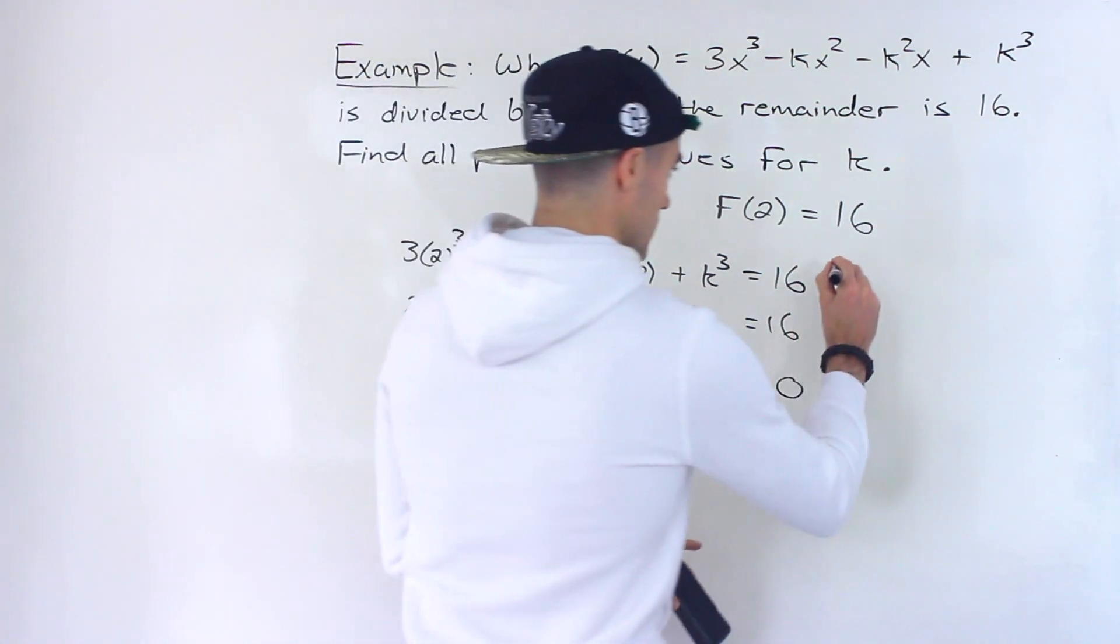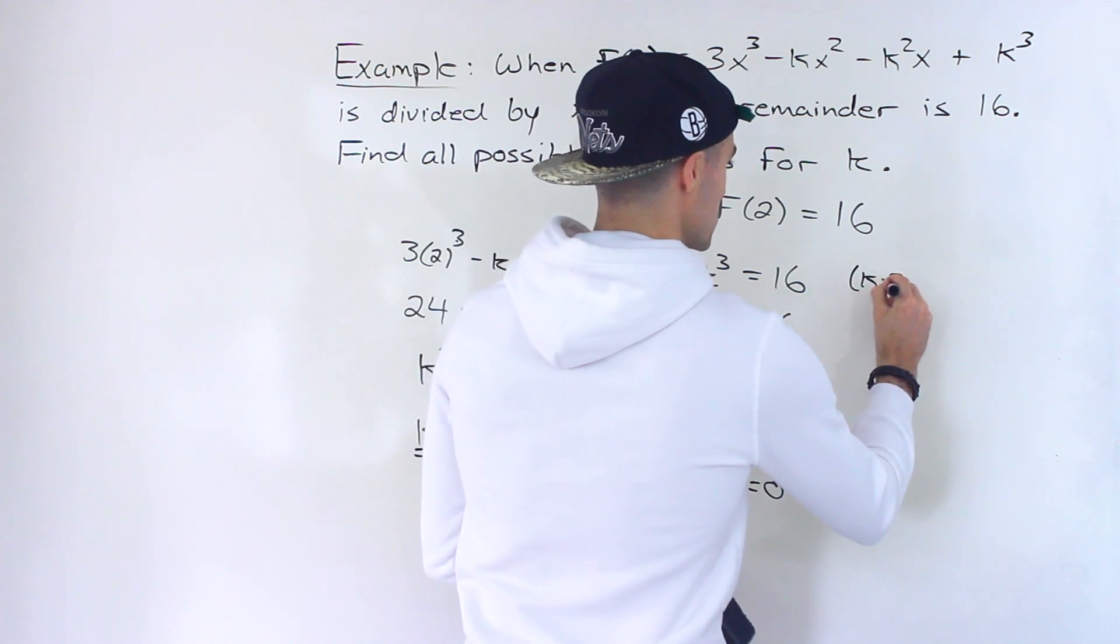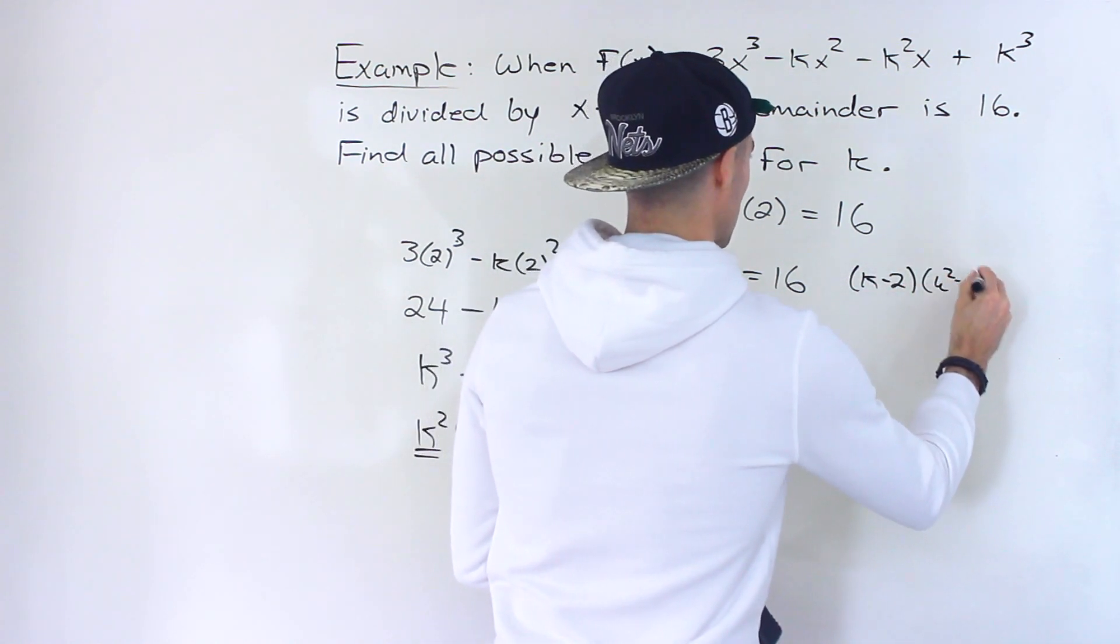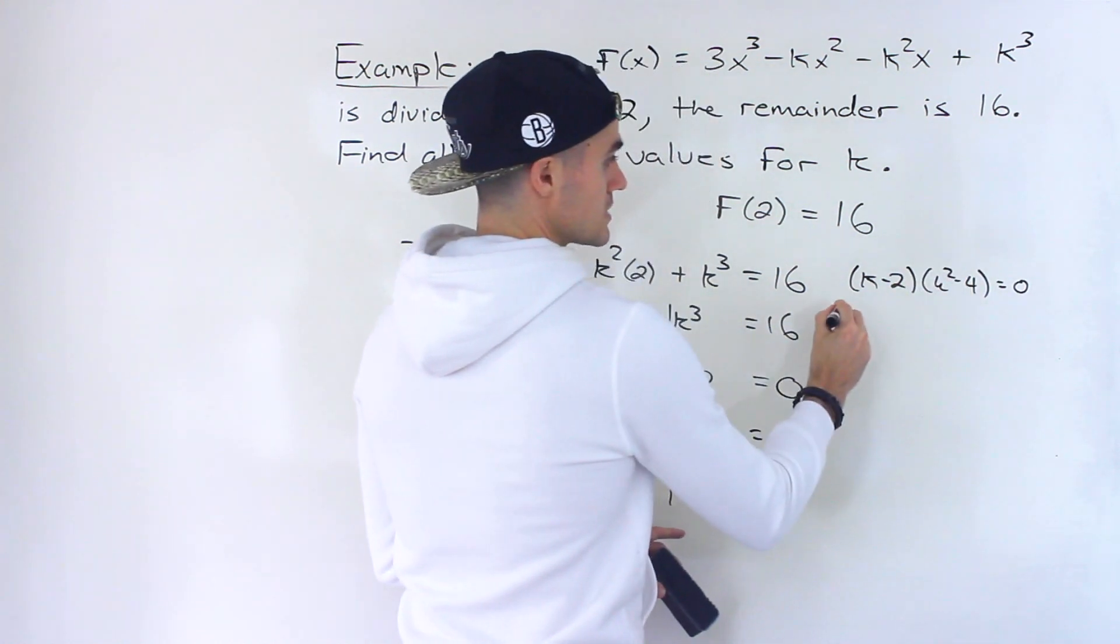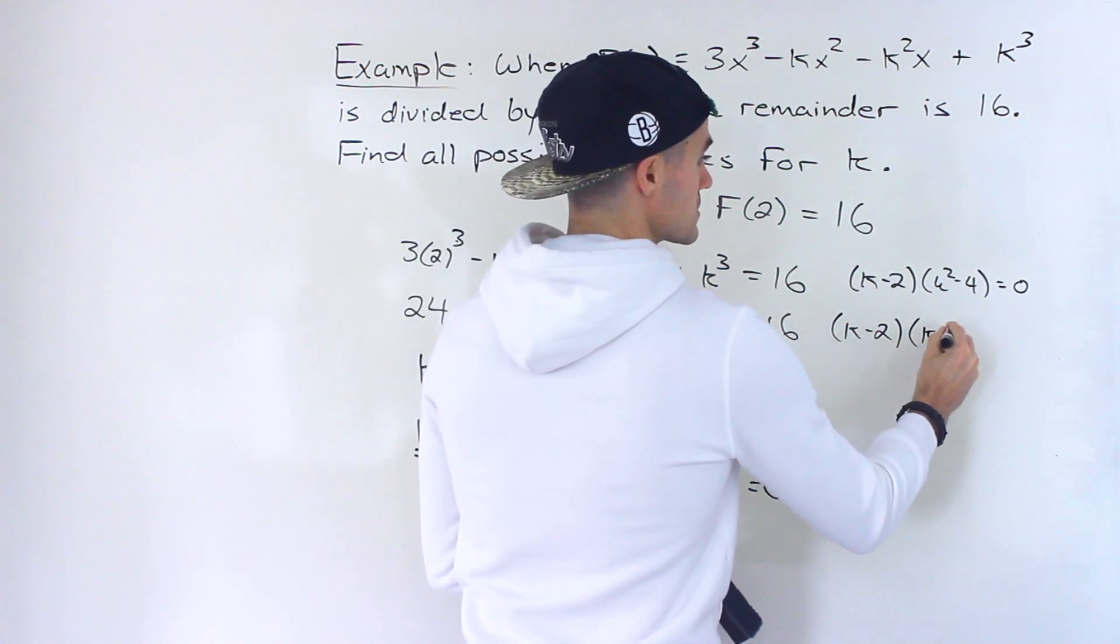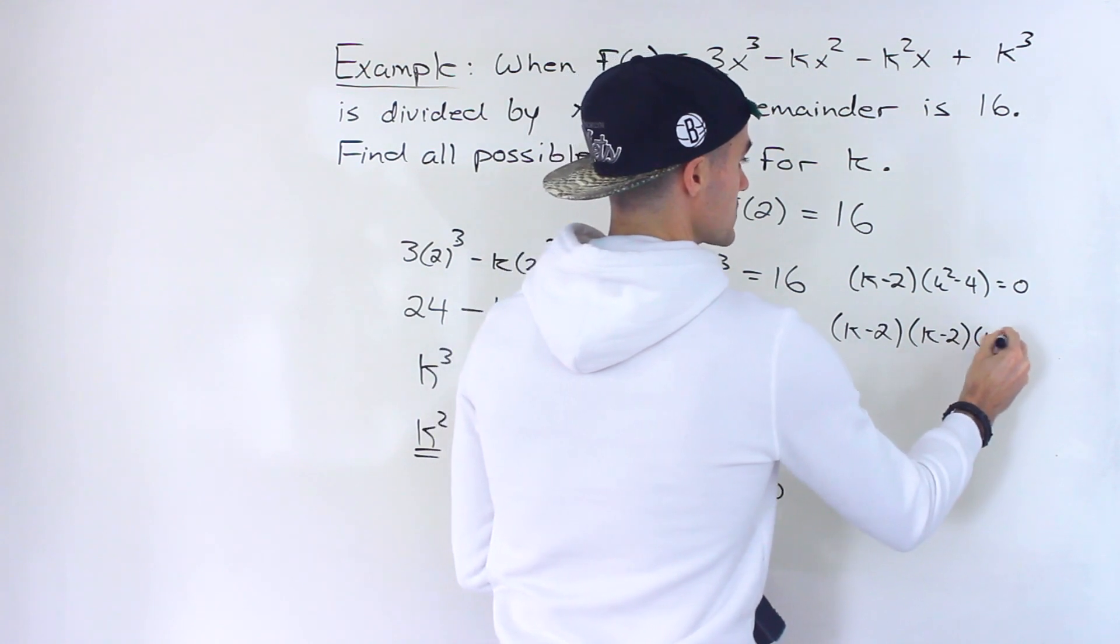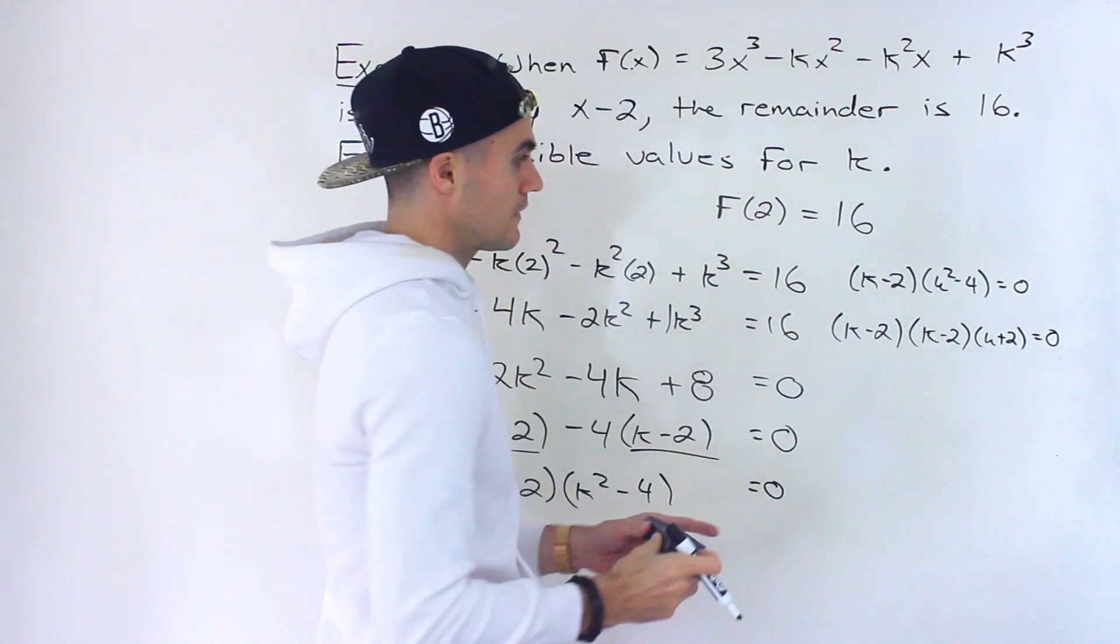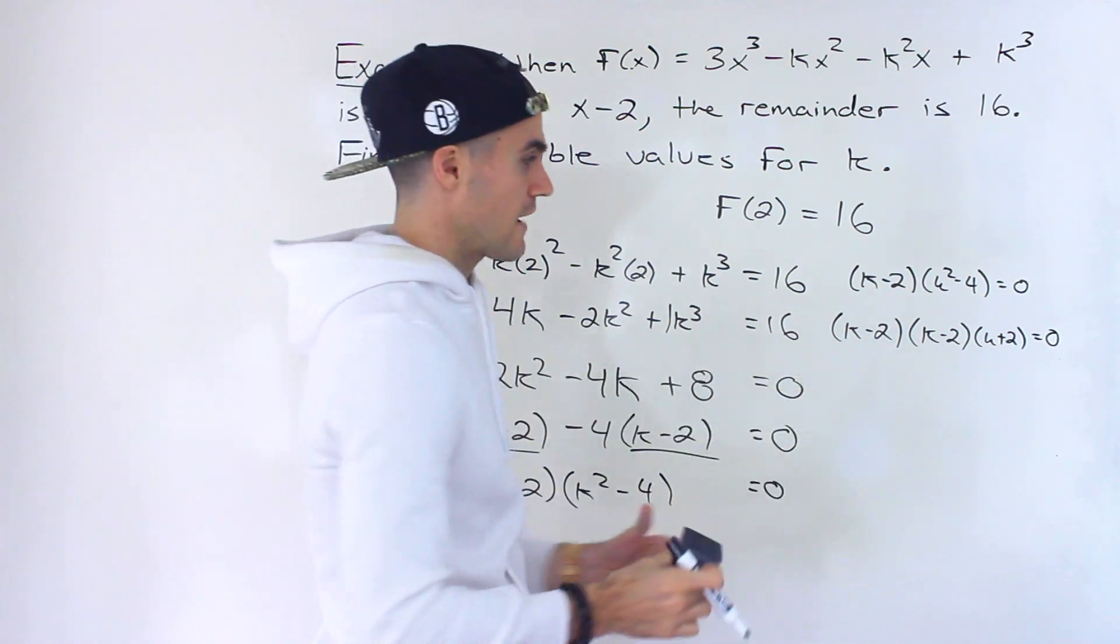Continuing: (k - 2)(k² - 4) = 0. Notice k² - 4 factors into (k - 2)(k + 2)—that's a difference of squares. Notice we have the same factor twice, so we can combine them.